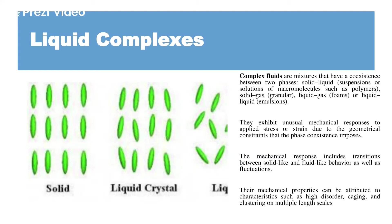Liquid crystals are complex mixtures where two stages co-exist. They are partially solid and partially liquid. This can also apply to solid-gas transitions — for example, the granular state — or to liquid-gas transitions. You must have seen liquid foams like shampoo foam, which is partially liquid and partially gaseous. Similarly, emulsions are liquid-liquid mixtures having the properties of both liquids.